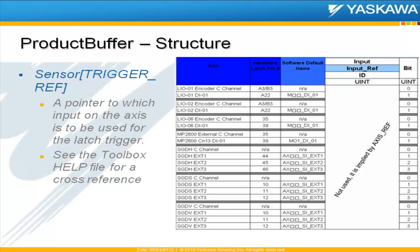One of the only tricky things about the structure that sometimes causes confusion is the sensor input, because it's a data type called TriggerRef. It's really a pointer to which input on the axis is going to be used for the latch trigger. There's more help in the toolbox help file.